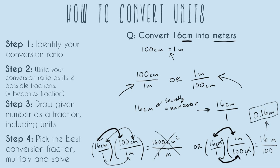Assuming we're in a science class, we need to do sig figs. Our original problem, 16, had two sig figs — one for each non-zero digit. Our final answer, 0.16 — the leading zero is never a sig fig, but both the 1 and 6 are, so our final answer also has two sig figs. Conversion ratios don't count as sig figs — 100 centimeters equals one meter is considered a perfect number, not a measurement we made in the lab.